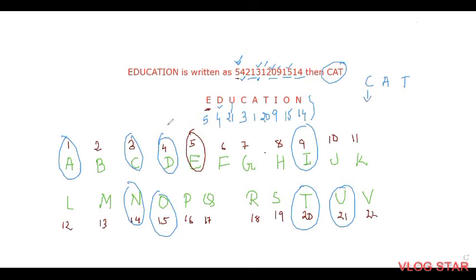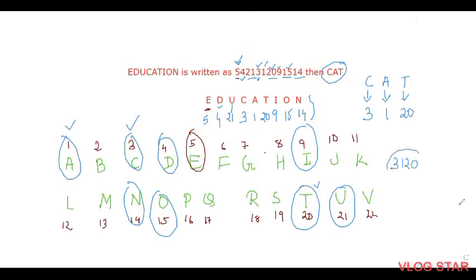For CAT: C = 3, A = 1, T = 20. So CAT will be written as 3, 1, 20 — that is '3120'. I hope you now understand how to solve this kind of sum. Let us take one more example.